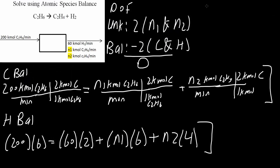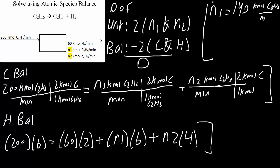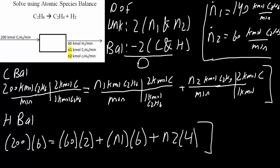So we ultimately got that N1 was 140 kilomoles of C2H6 per minute, and N2 was 60 kilomoles of C2H4 per minute. Now you may ask that 60 plus 140 plus 60 would be 260, but the input is 200. If you notice, C2H6 is producing these two things, so essentially this 60 and this 60 are one thing. So this is 60 plus 140, and that's all you need to do for this problem.